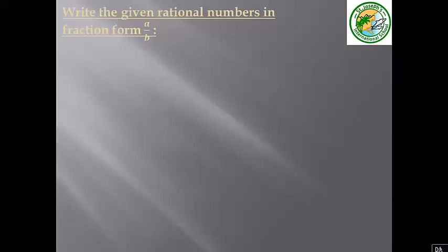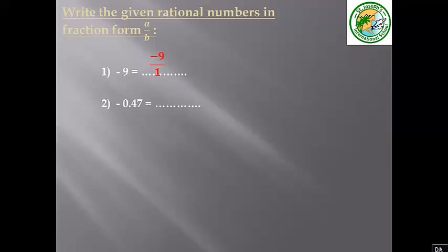Write the given rational numbers in fraction form a over b. Negative 9 becomes negative 9 over 1. Negative 0.47 becomes negative 47 over 100 — we convert the decimal to a fraction. And 3 and 2 over 5 is converted to the improper fraction: 3 times 5 is 15 plus 2, giving 17 over 5.